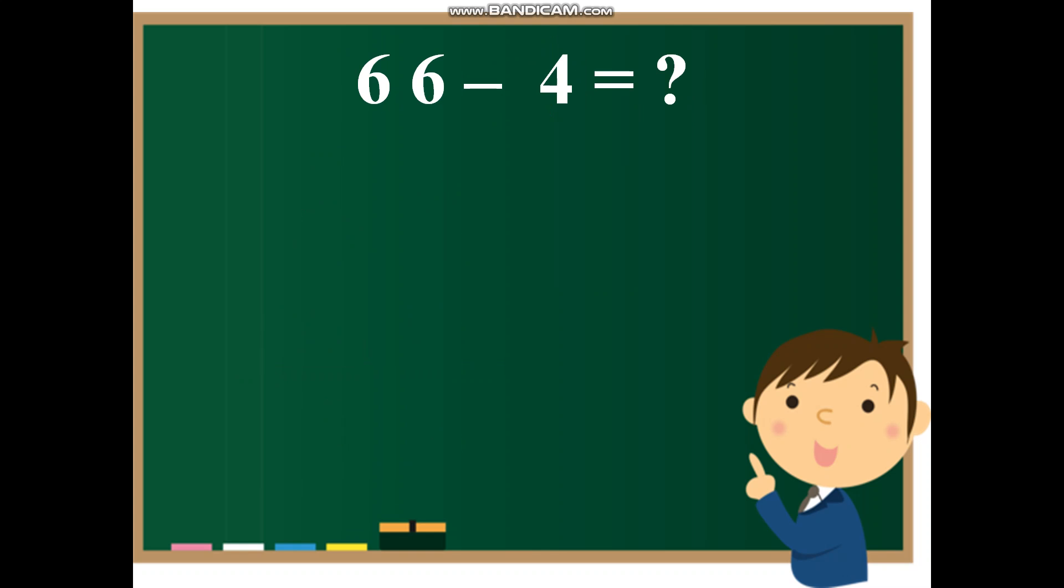66 is a two digit number. And 4 is one digit number. Now let us see how we will do it.